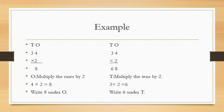Now the second step is multiply the tens by two. That is three multiply by two is equal to six. So children, write six under tens. So your answer will be sixty eight. In this way, we will multiply a two digit number by a one digit number.